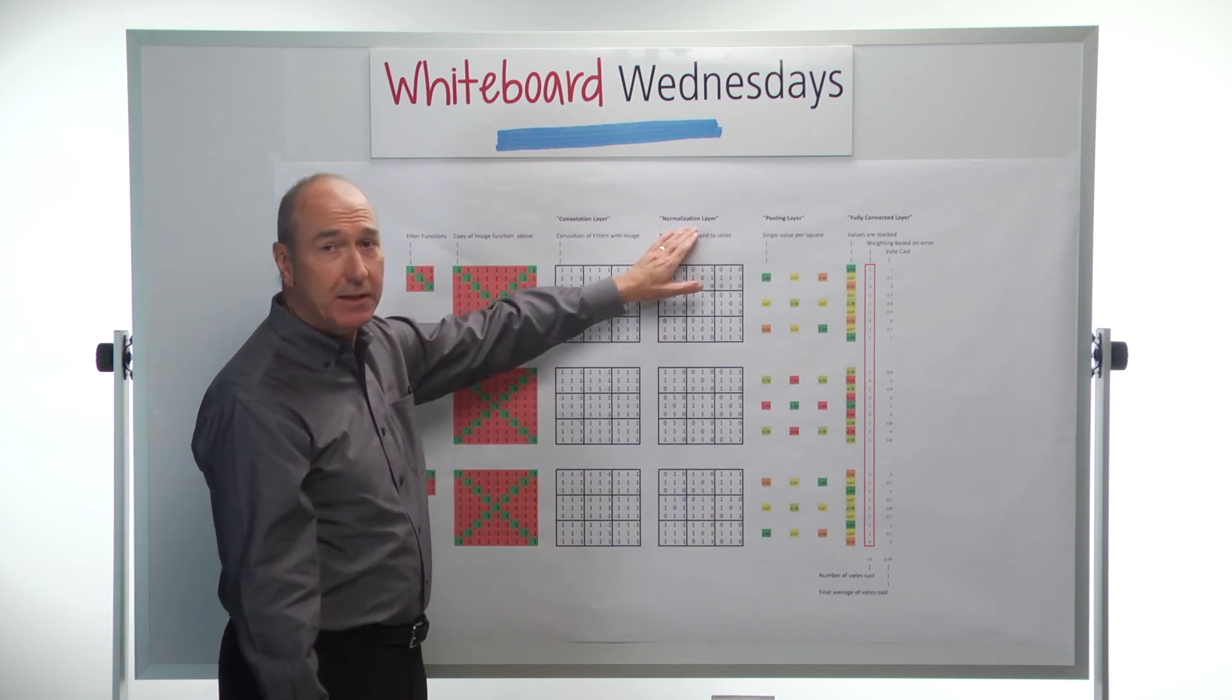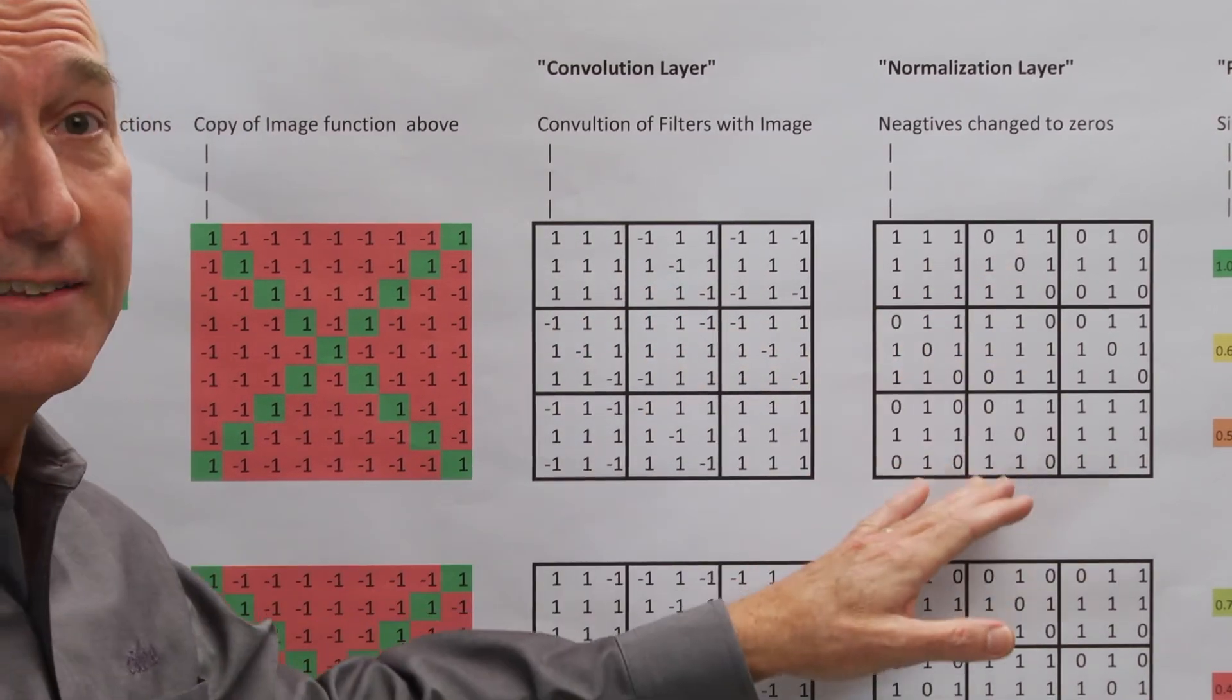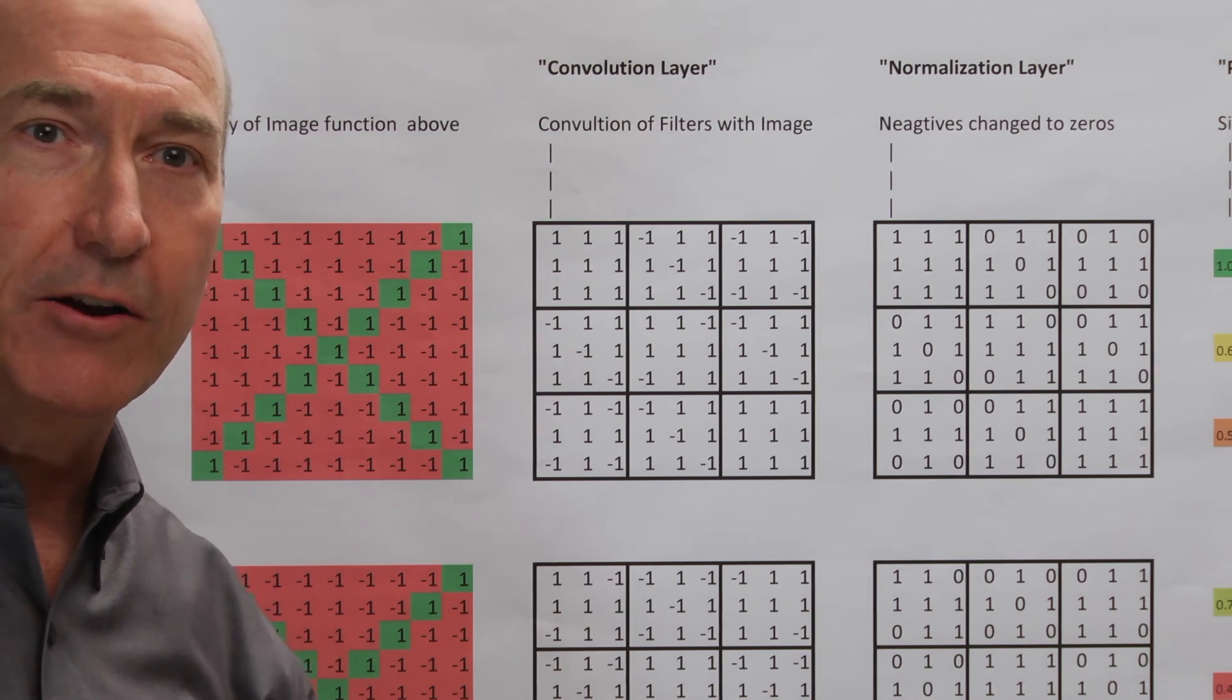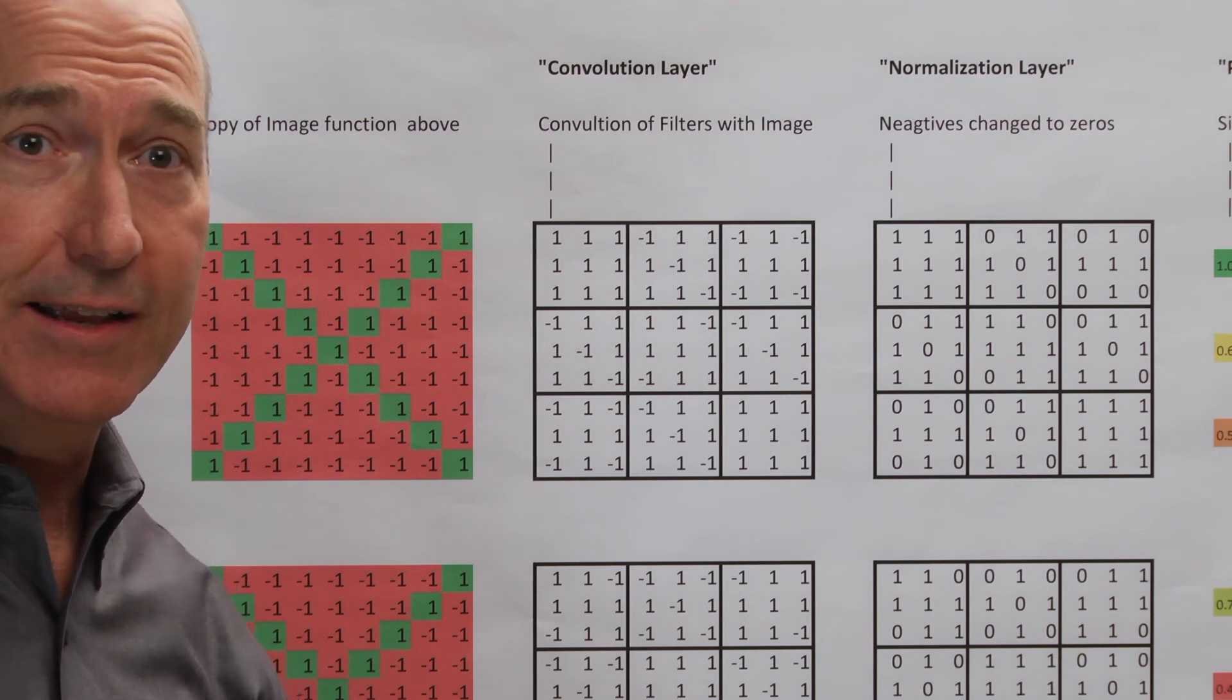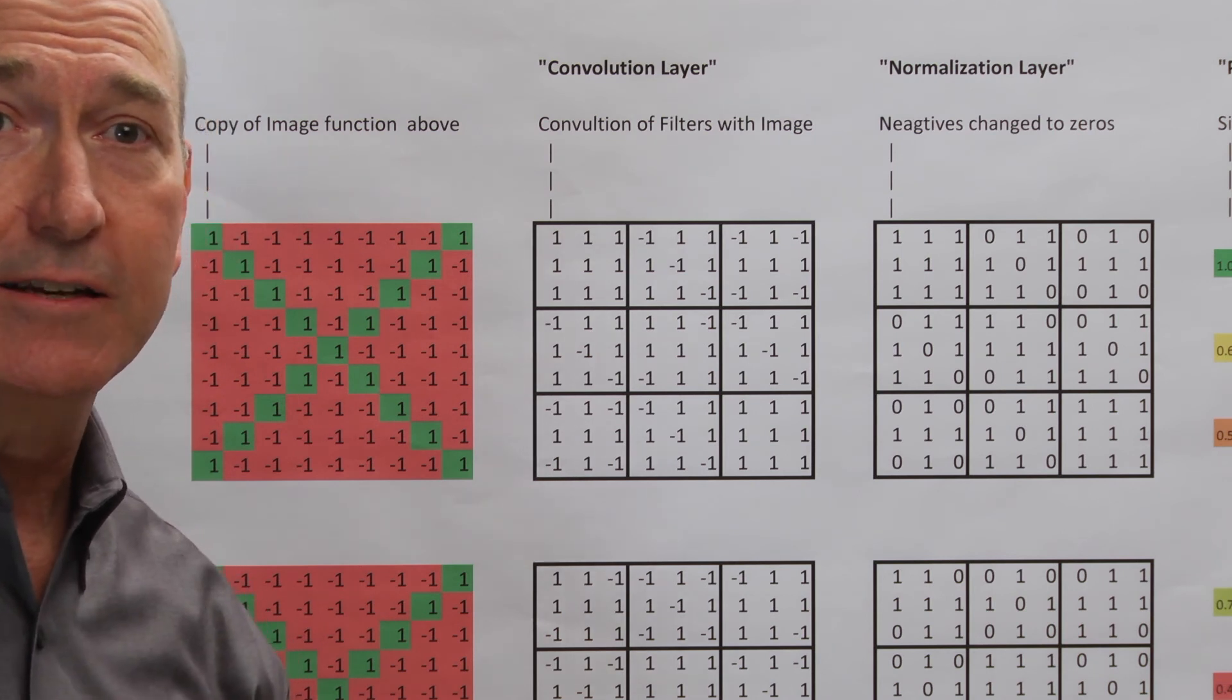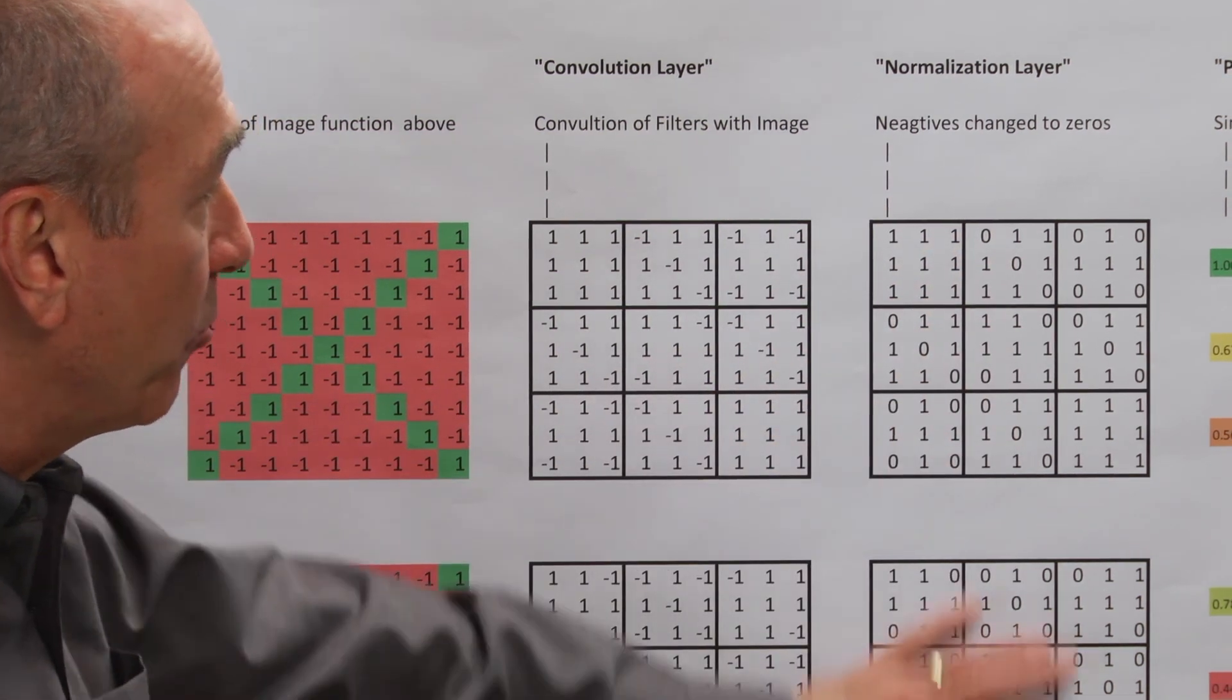They do it in what's called a normalization layer, where everything that's negative, we're just going to set it to zero. That's done using an operation called a rectified linear unit, or a relu, and it does exactly what I said. It simply takes everything that's negative, makes it zero. Everything that's positive, it leaves it as it is. So that gives us this array of values.